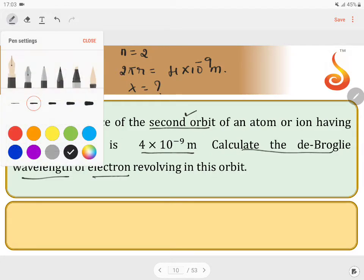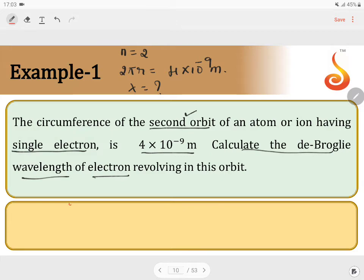The relation we know: 2 pi r is equal to the circumference of the orbit is equal to n lambda. In this, 2 pi r value is given, that's 4 into 10 power minus 9 equal to n is 2 into lambda.